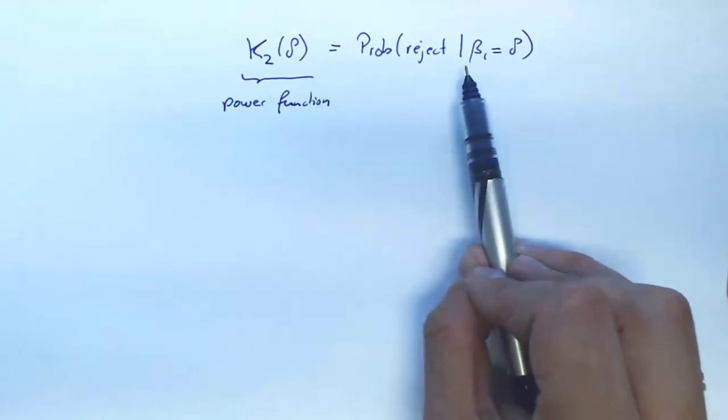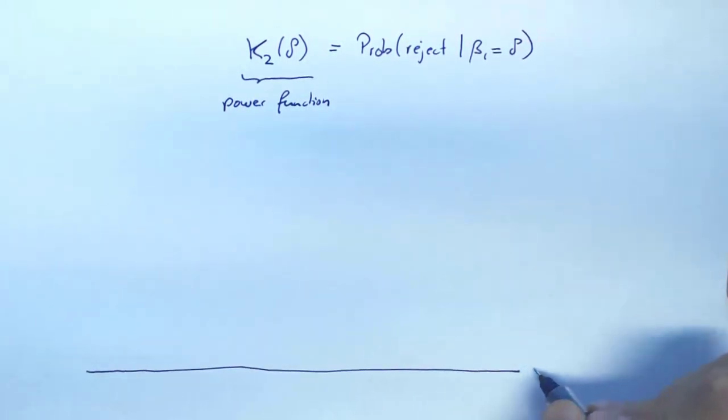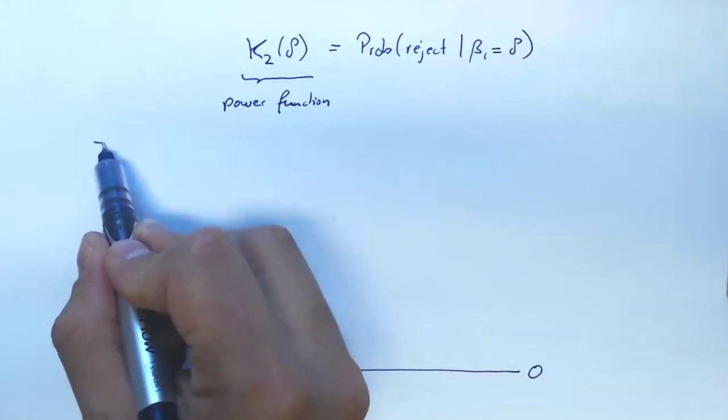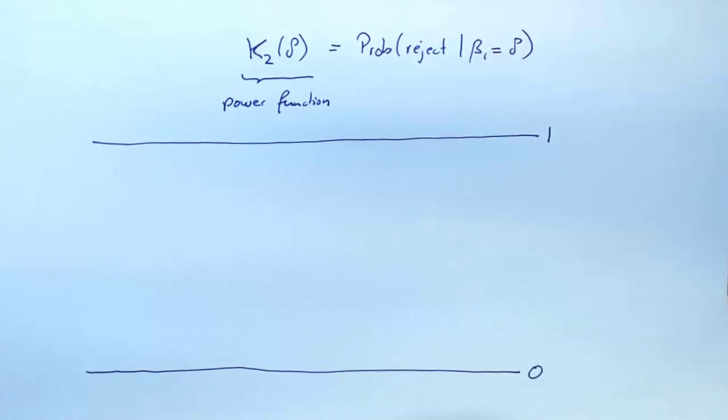What does it look like? Well, it maps into probabilities. So it takes values between 0 and 1. Which value does it take for delta equal to 0? Well, if delta is equal to 0, that means there's 0 distance from the null hypothesis. So the null hypothesis is true. And we know if the null hypothesis is true, we are rejecting with probability alpha.